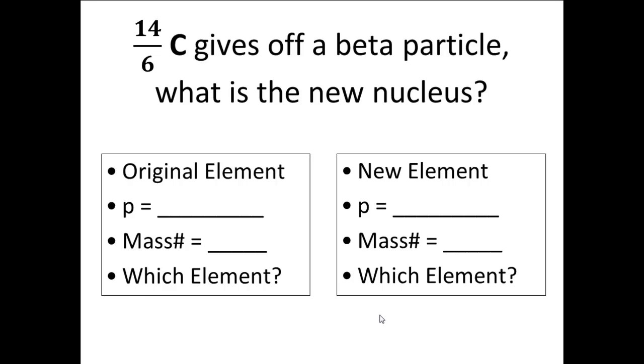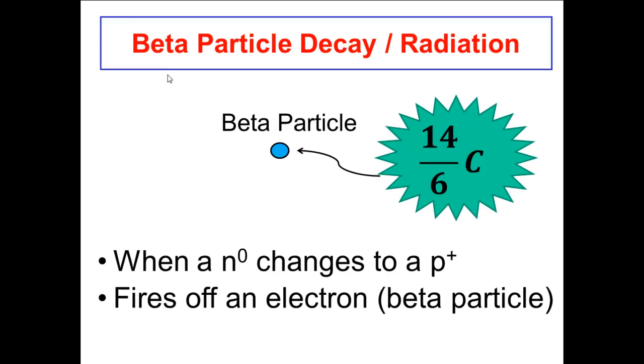In this example we're looking at 14 over 6 carbon and it's going to give off a beta particle. And I'm going to ask, what is the new nucleus? So because it's giving off a beta particle, we're making the assumption that the atom is radioactive and it's unstable. Now beta radiation, in case you forgot, it's when a neutron changes into a proton. So we're looking at a nuclear change where a neutron changes into a proton and in this case fires off a high speed electron.